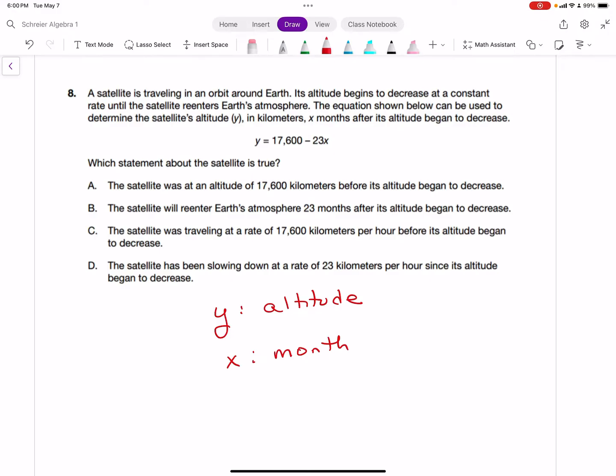It says in A, the satellite was at an altitude of 17,600 kilometers before its altitude began to decrease. And that's actually true, because time zero, so x equals zero, is the y-intercept. And the y-intercept then would be this 17,600. If we look at the other ones, it says the satellite will re-enter Earth's atmosphere 23 months later. We don't even know when that is, so that's definitely out. The satellite was traveling at a rate. We weren't talking about rates, we were talking about altitude. And the satellite has been slowing down at a rate of 23 kilometers per hour since its altitude began to decrease. Nope, that's months. The 23 represents months. So our answer is answer choice A.